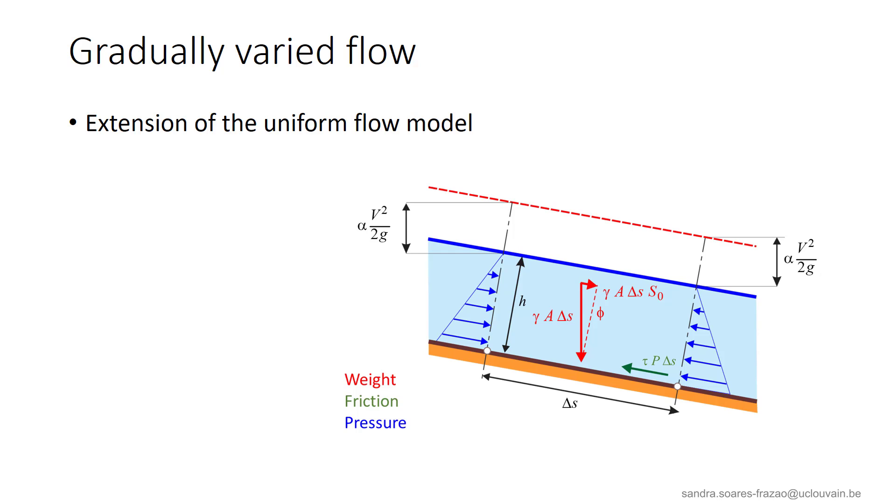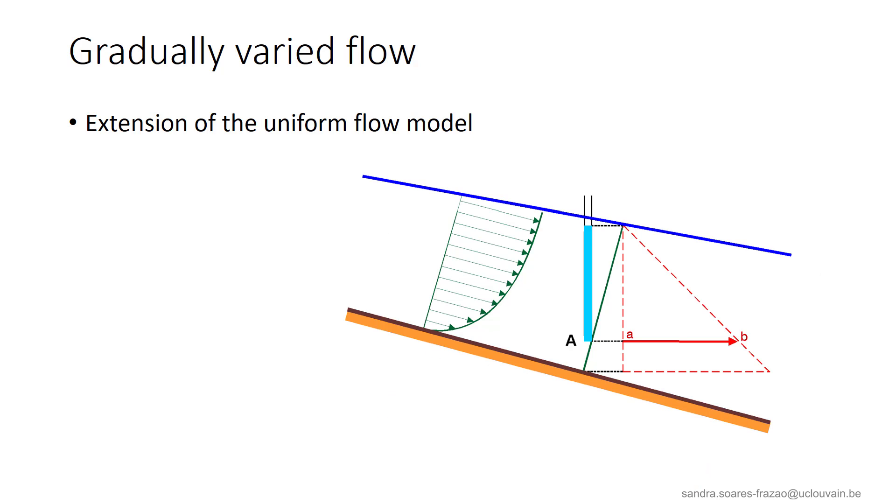As a reminder, a uniform flow was defined as a flow in which all the variables are constant in space and time, so a constant water depth and velocity. In the model of gradually varied flow, the flow is still steady, which means that there is no time variation of the flow variables, and that the discharge is constant in space and time.